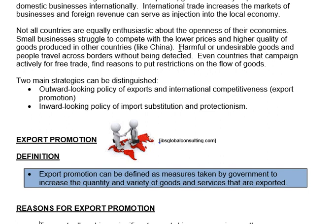The second problem is that harmful or undesirable goods and people travel across borders without being detected — for example, illegal drugs enter through our borders and aren't always found. The last point is that even countries that actively campaign for free trade find reasons to put restrictions on the flow of goods — what we might call 'new forms of protection.' It is normally developed countries that think up reasons not to trade with developing countries. We'll work through that as we go through this chapter.